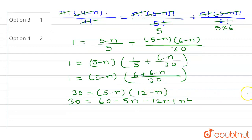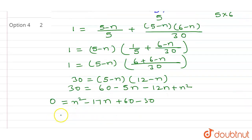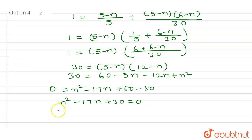Expanding: 30 equals 60 minus 5n minus 12n plus n squared, which gives n squared minus 17n plus 60 minus 30 equals 0, so n squared minus 17n plus 30 equals 0.